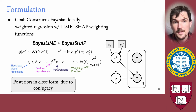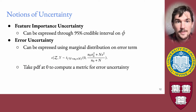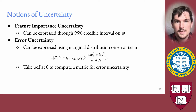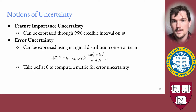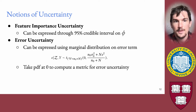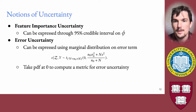We can compute the posteriors of our method in closed form due to conjugacy. Our method reveals two key notions of uncertainty. The first is feature importance uncertainty, expressed using the 95% credible interval on the feature importances phi — the interpretation being that the true converged value will be included within this interval 95% of the time. We additionally recover uncertainty related to how well the local explanation fits the underlying black-box model, which we call the error uncertainty of the local explanation.